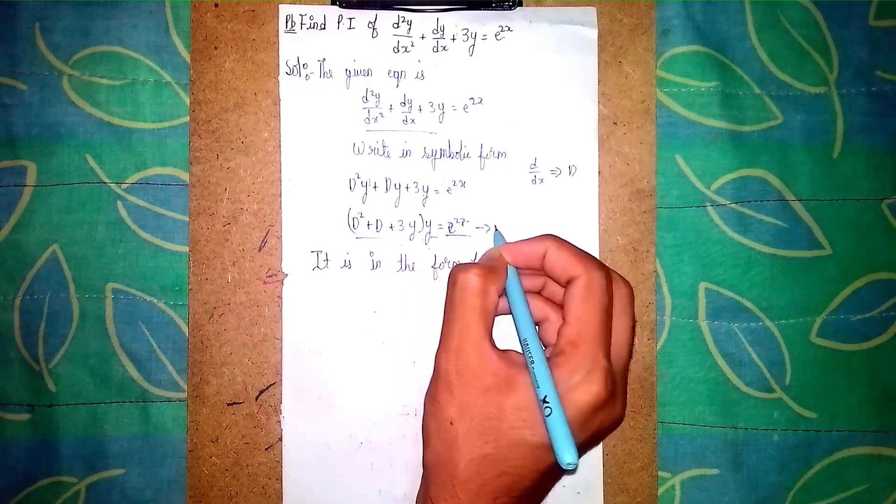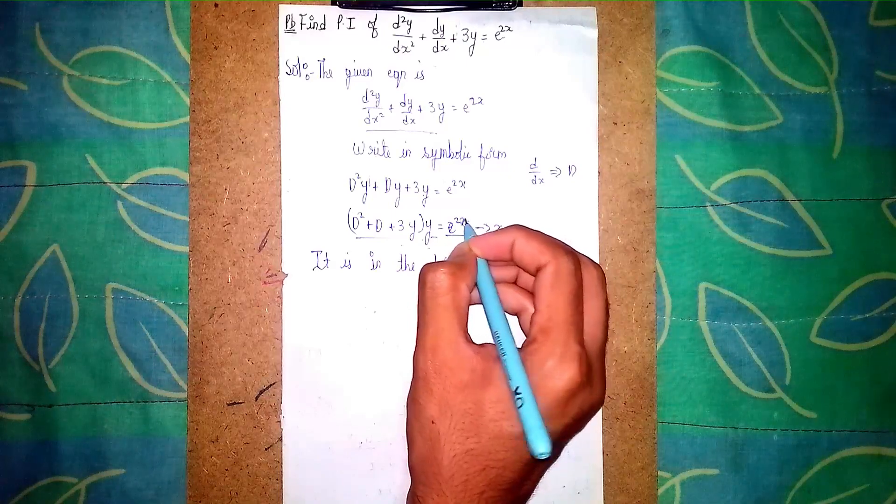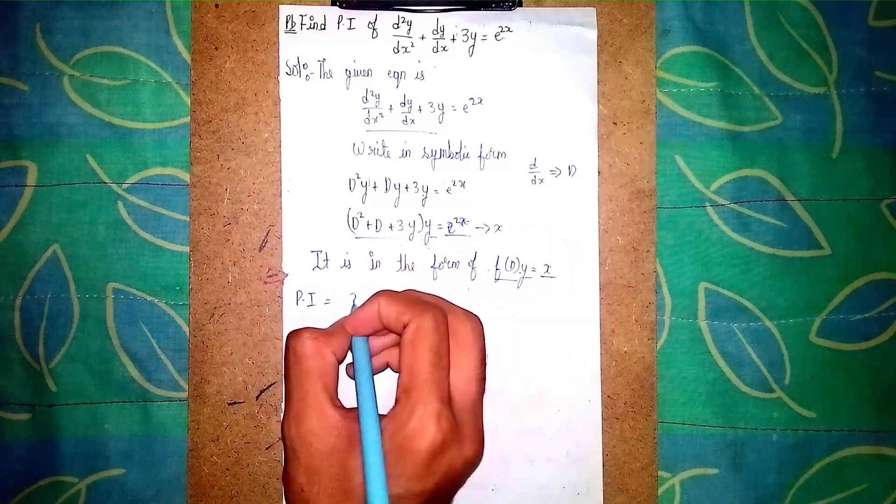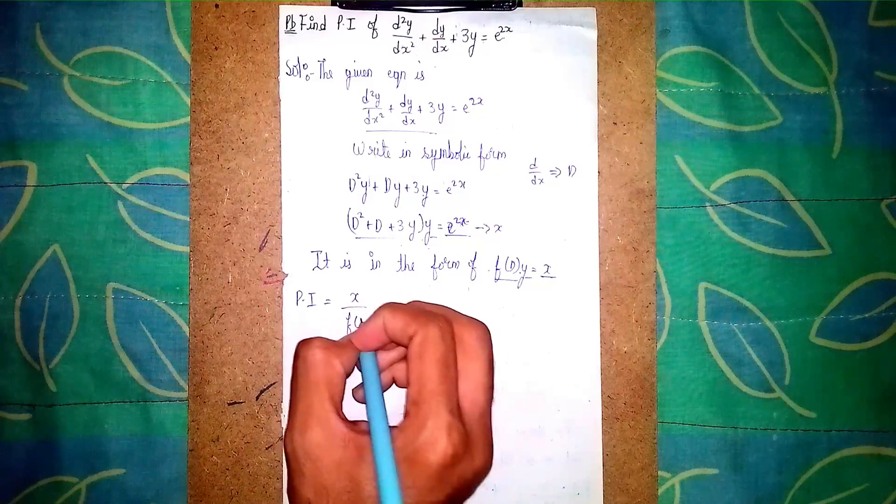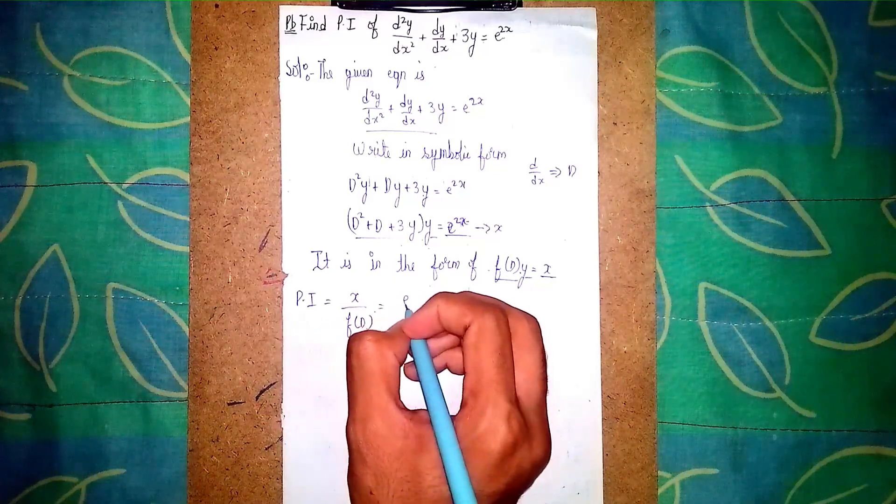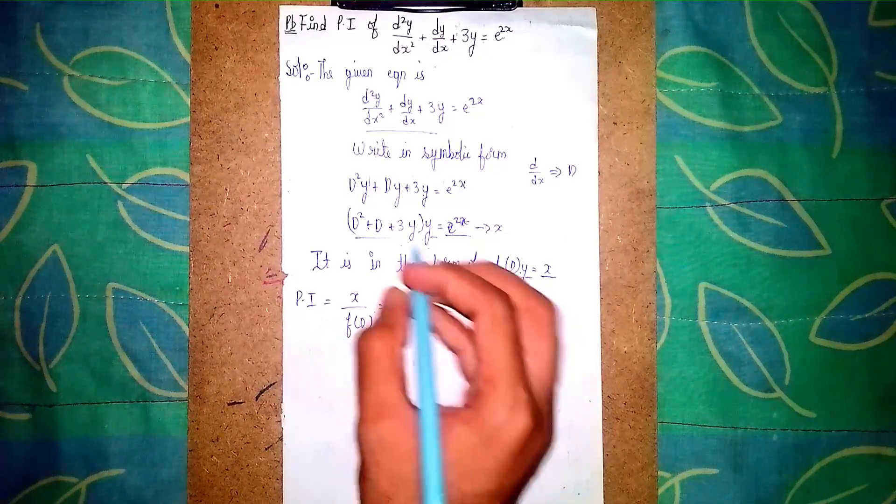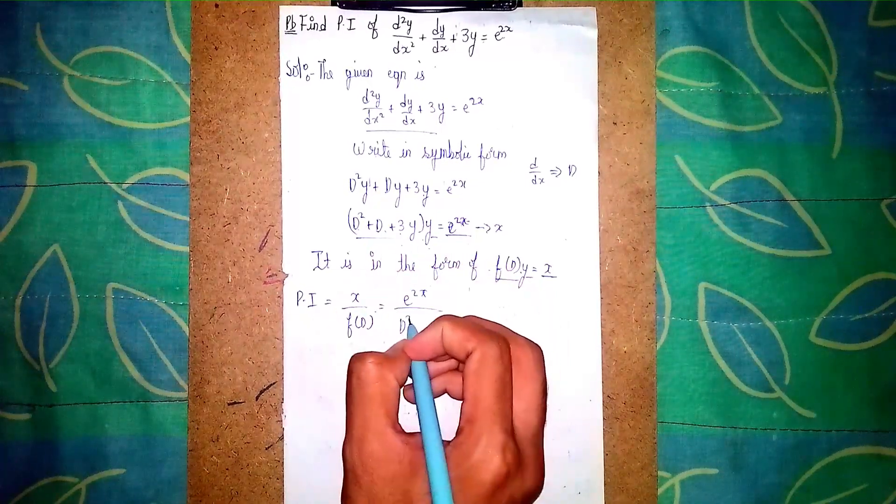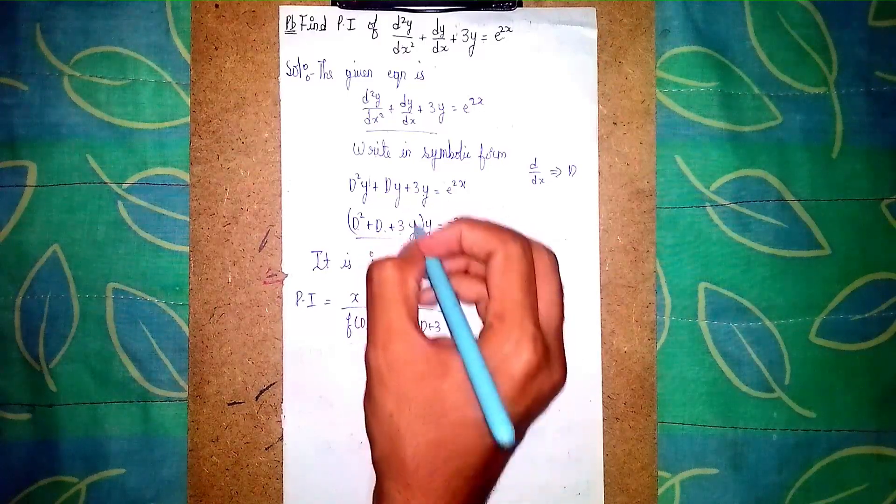Now particular integral PI equals x/f(D). Now substitute here. What is x? e^(2x). What is f(D)? D² + D + 3. We took y as common, so D² + D + 3.